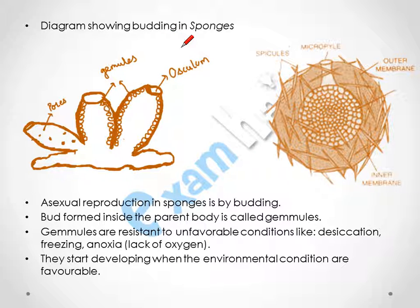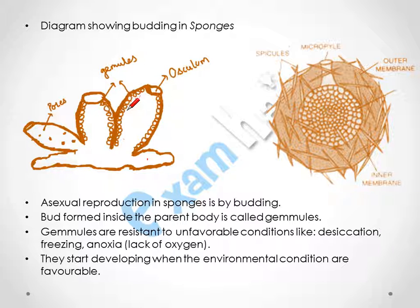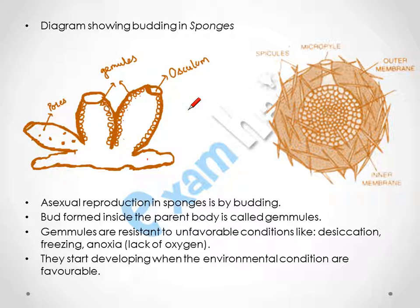Endogenous budding is observed in sponges. This sponge is attached to a substratum — the base is called the substratum. Buds are present along the wall of the sponge. The osculum is a hollow area from which water is taken in and expelled from the organism.